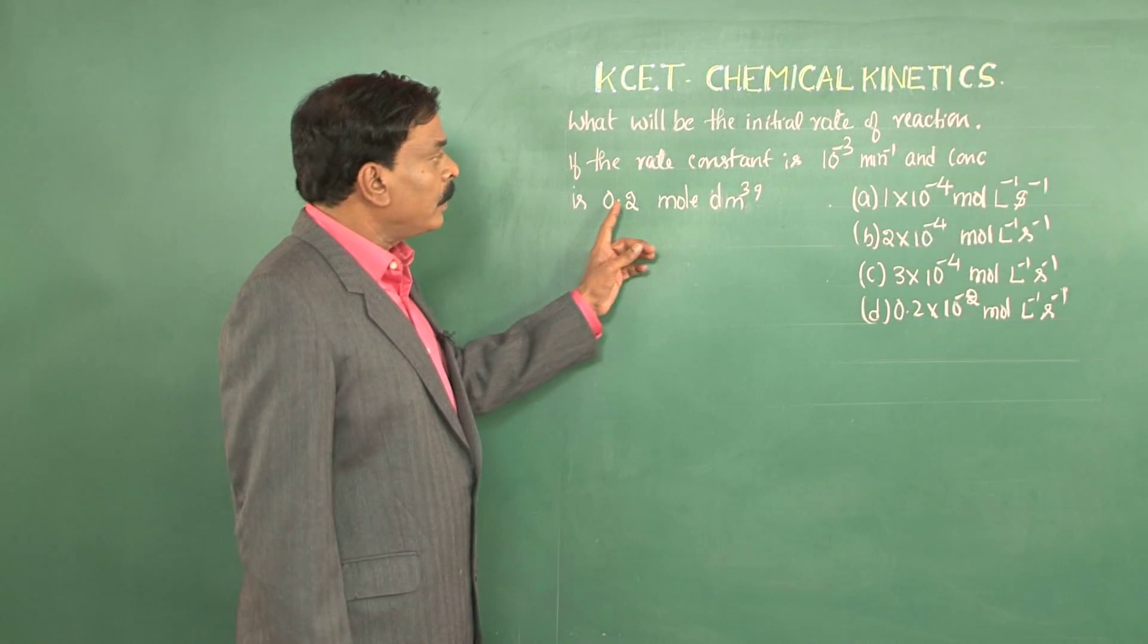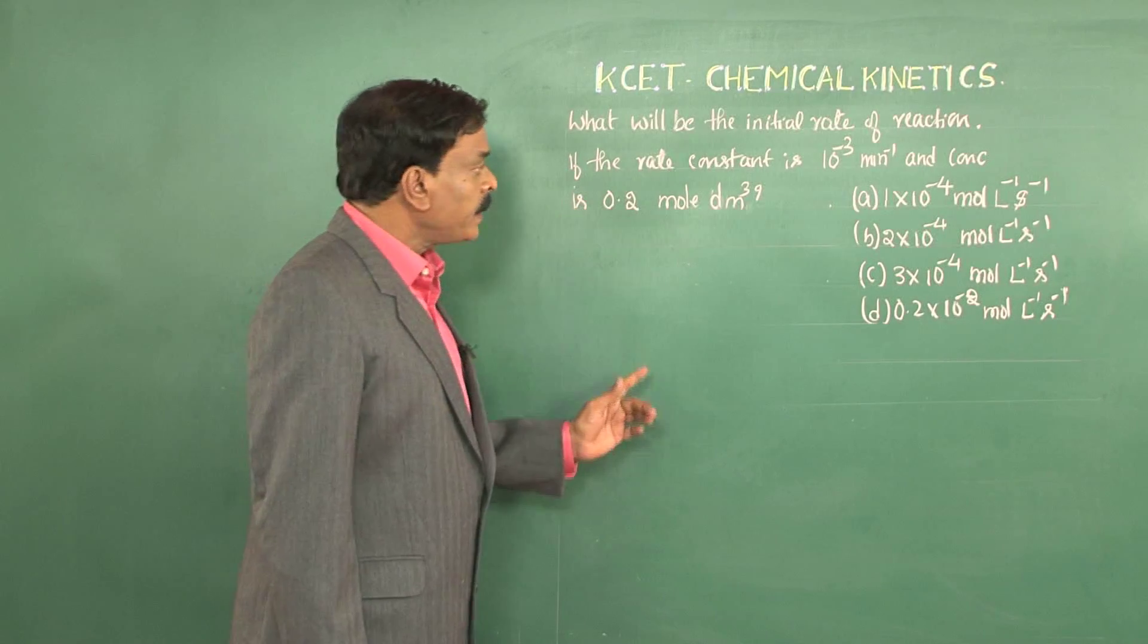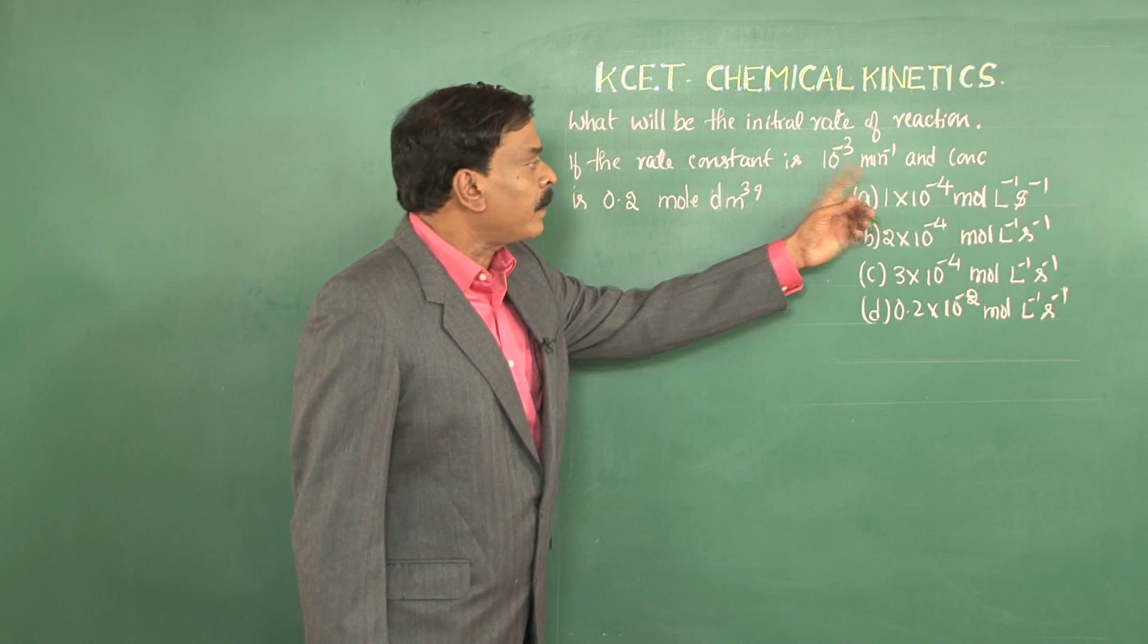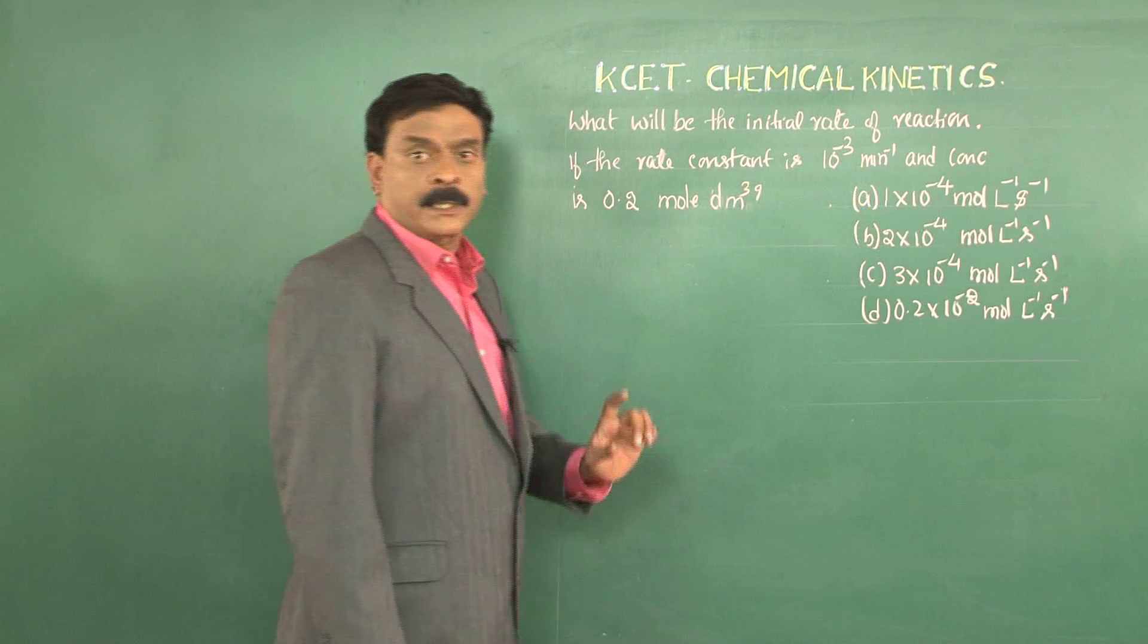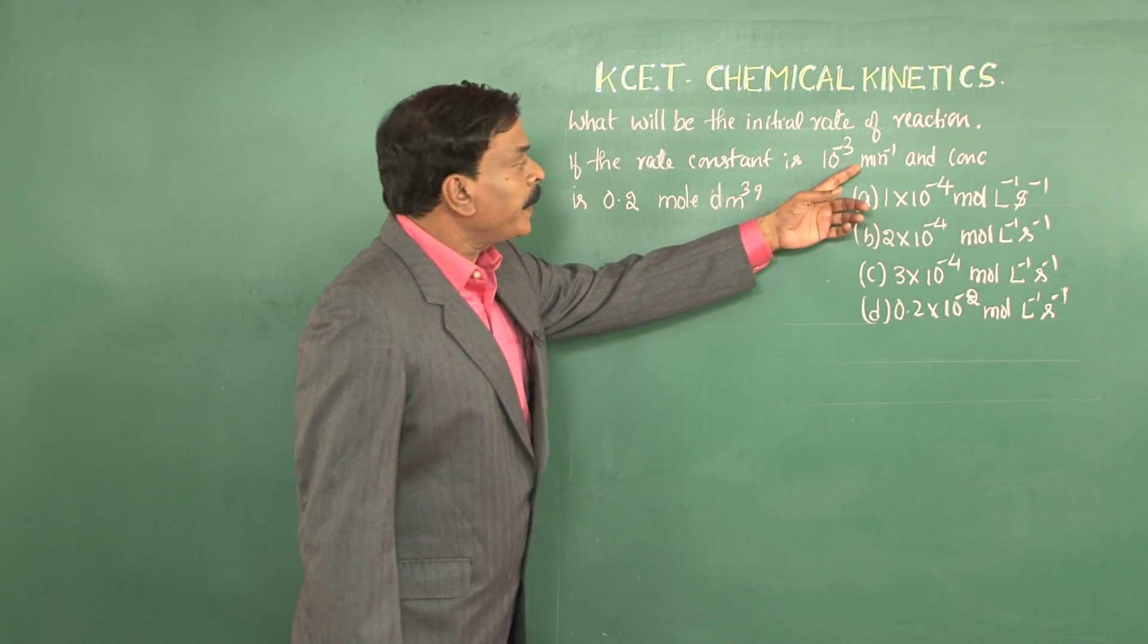Here, we have to know what the order of the reaction is. One of the ways of knowing the order of the reaction is by checking the unit of the rate constant. The rate constant unit here is per minute and for a first order reaction, the unit is per minute.